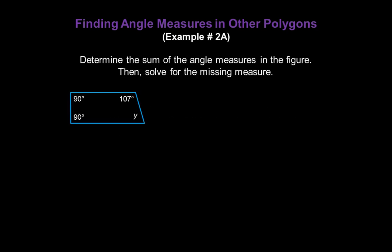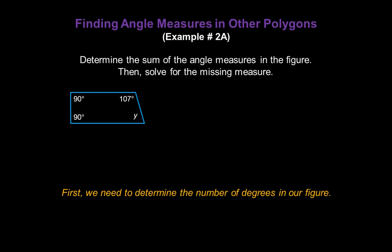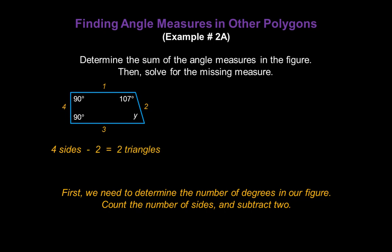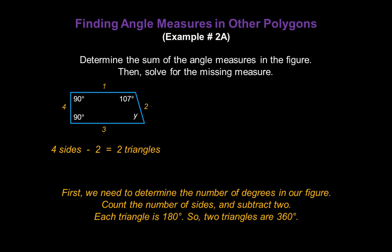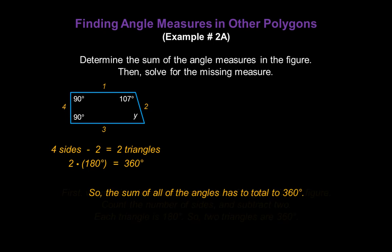Let's look at examples of finding angle measures in other polygons. Determine the sum of the angle measures in the figure, then solve for the missing measure y. First, count the number of sides: this figure has four sides. Four sides minus two gives us two triangles. Two triangles times 180 degrees tells us the total degrees in the figure is 360. So the sum of all the angles has to total 360 degrees.